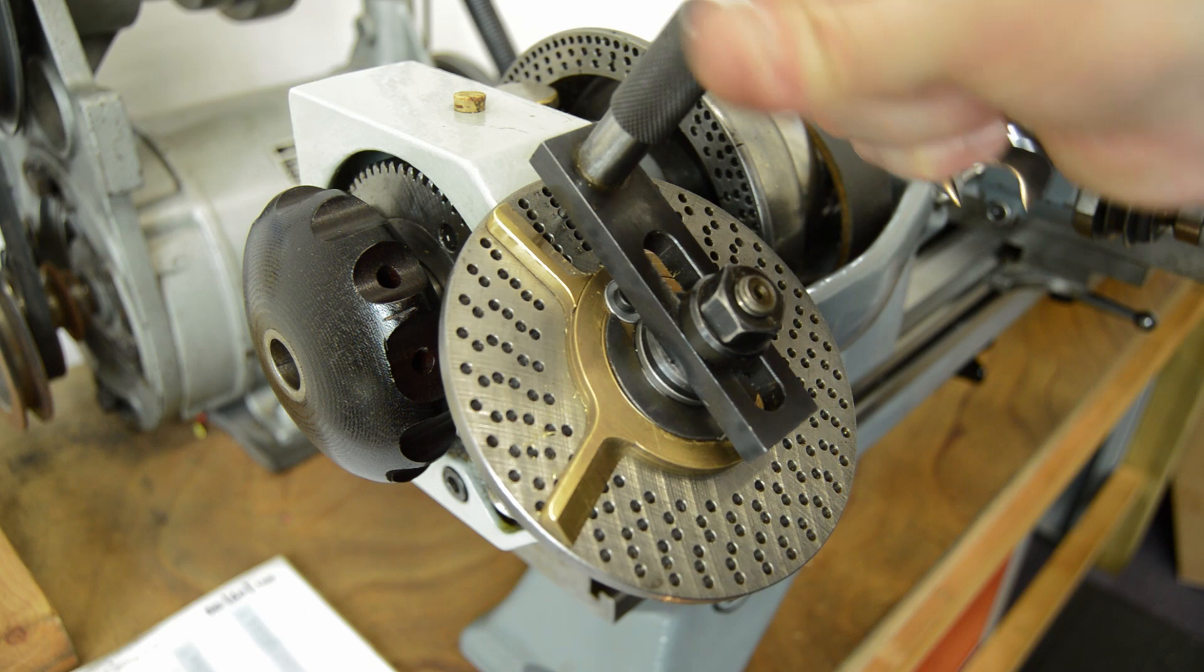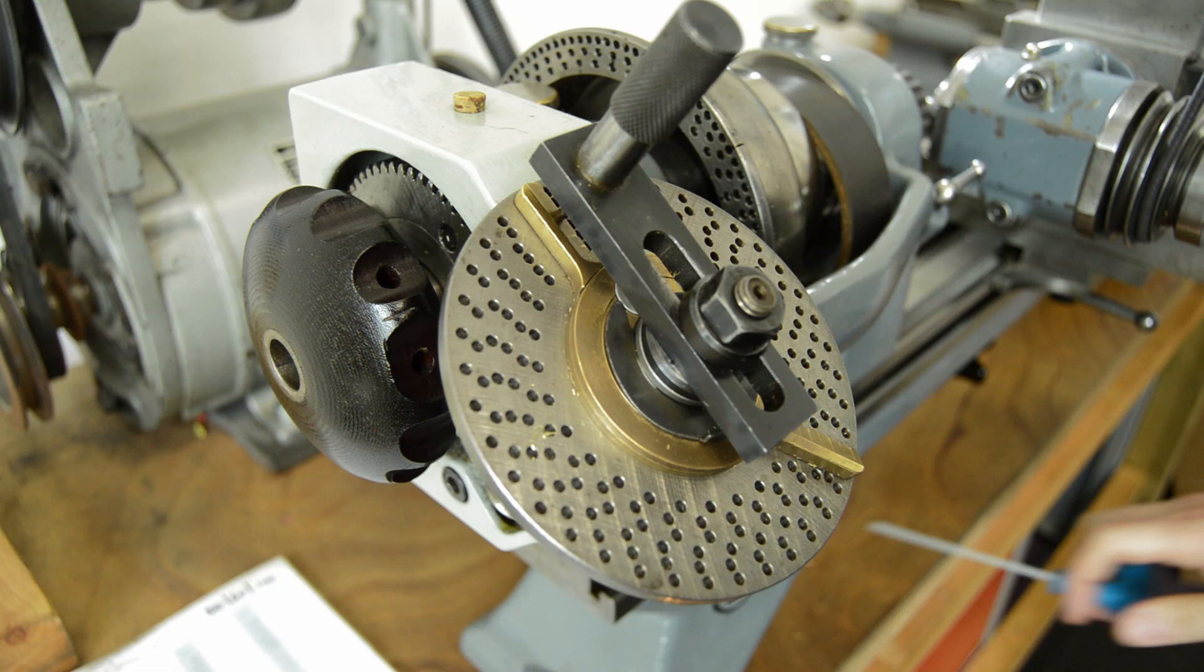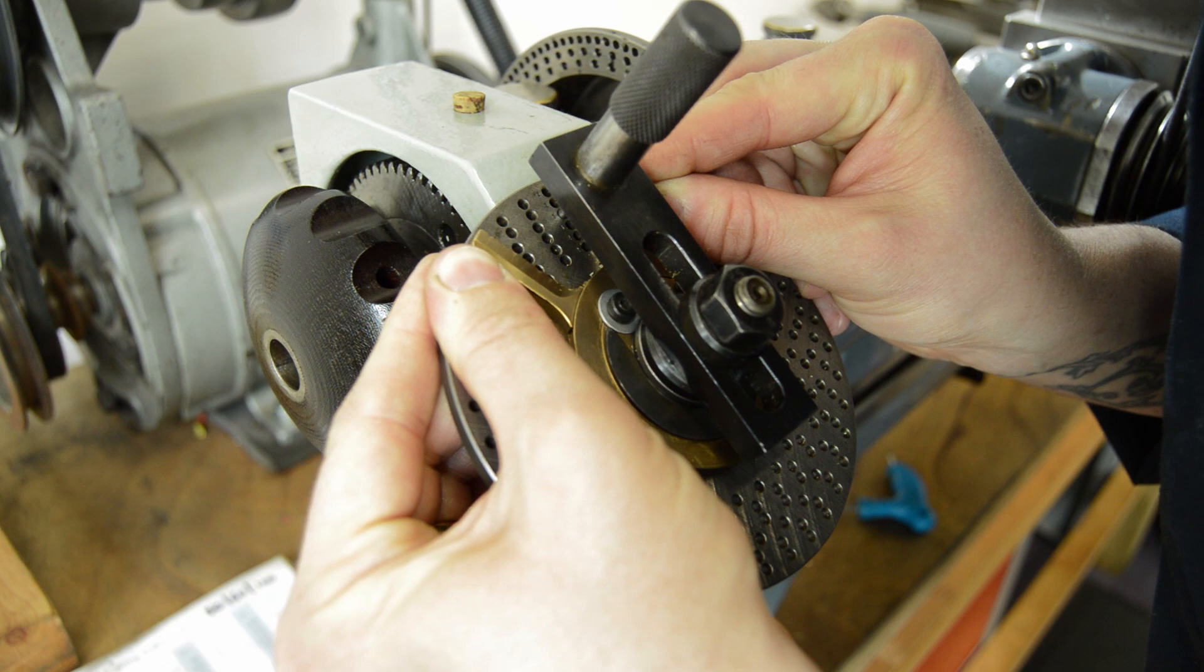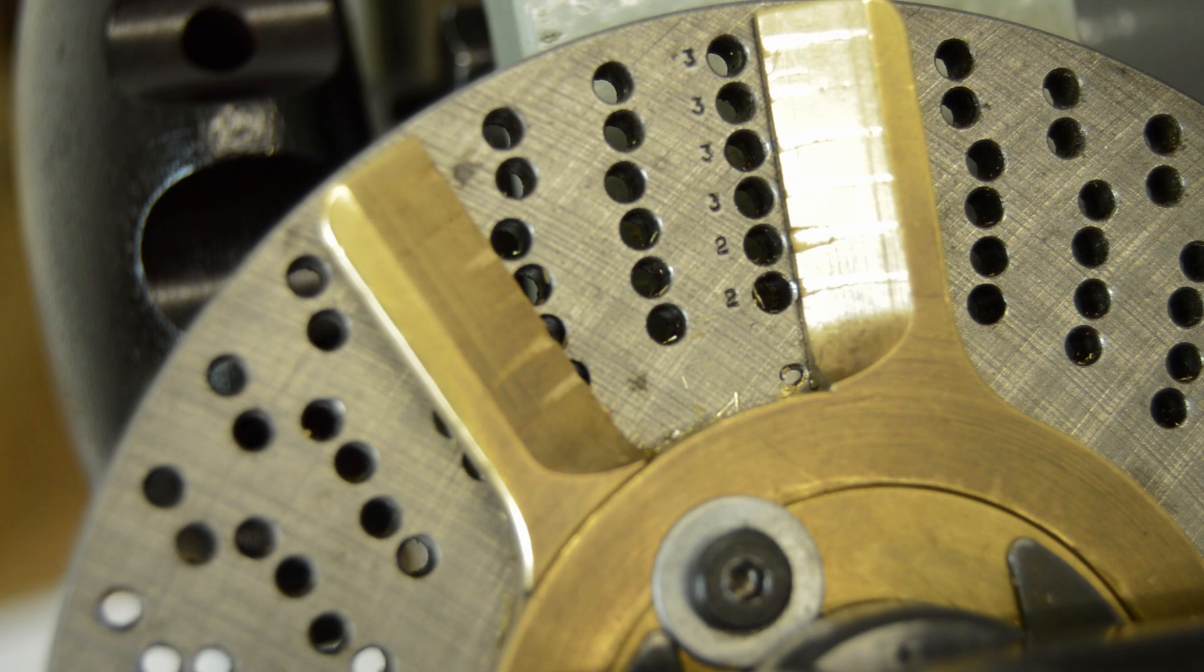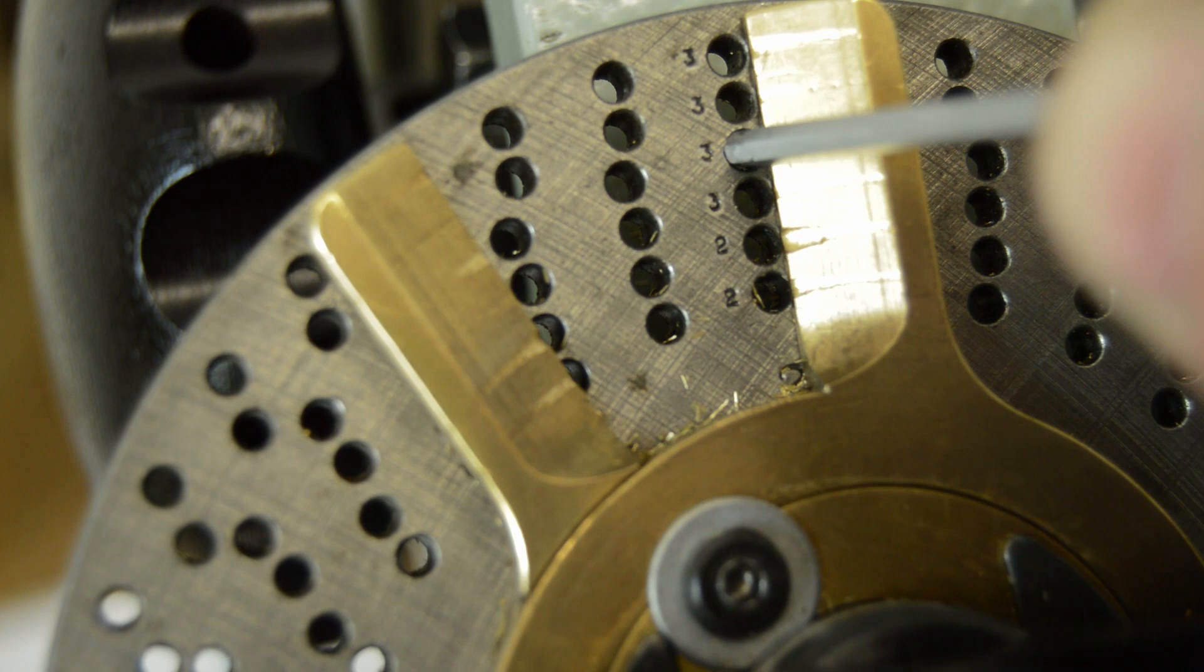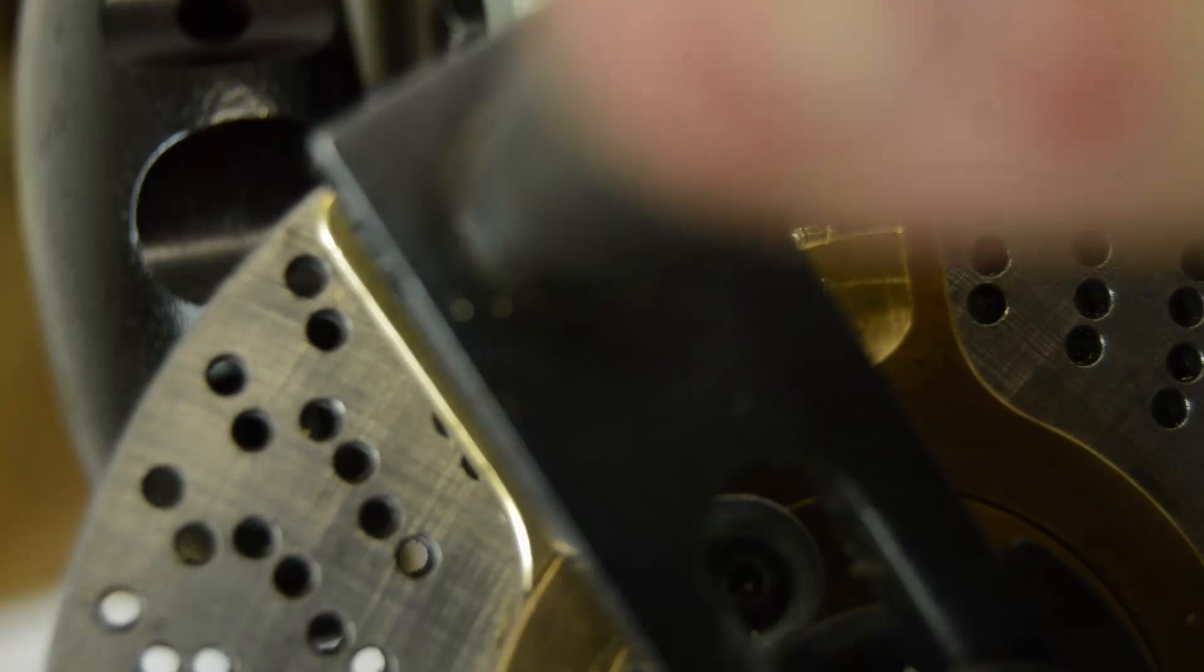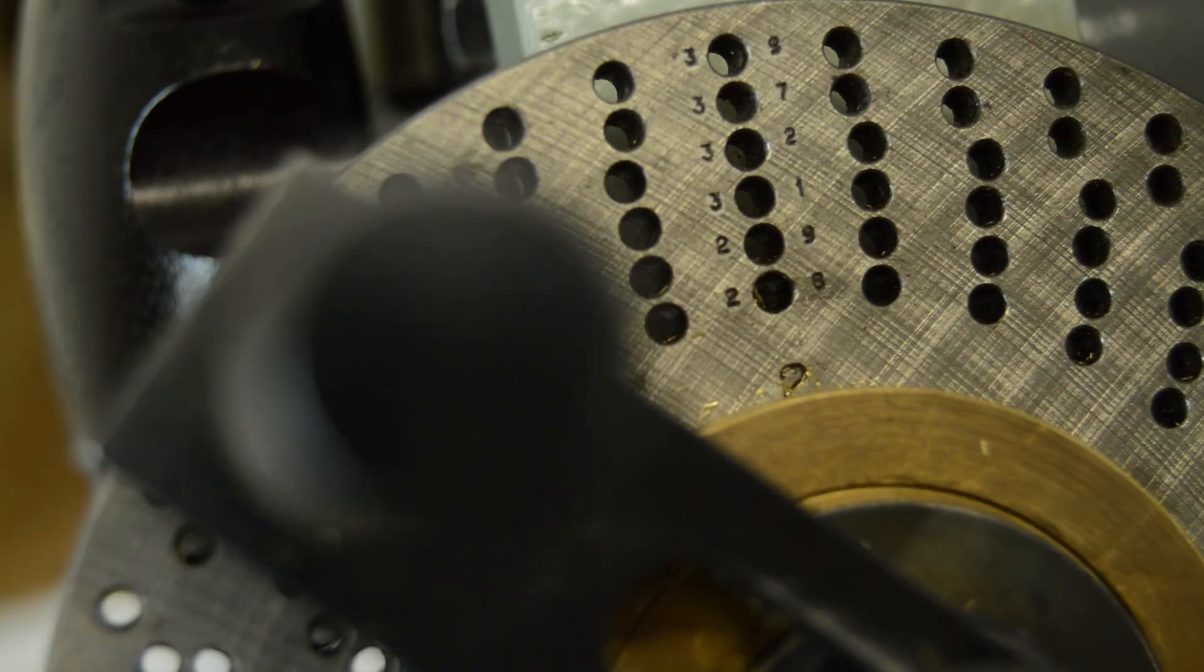Now we need to set the sector plates so that we're only going to do 30 holes and not 32 on each division. It's pretty easy to just move it back to holes. On the 32 division ring, this would be 30, 31, 32. For each revolution we'd start there and go around like that and into there, that means we've turned 30, move the sector on, and then we'll do another 30 and so on.